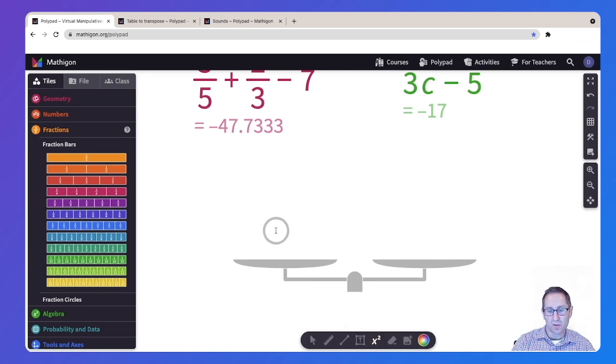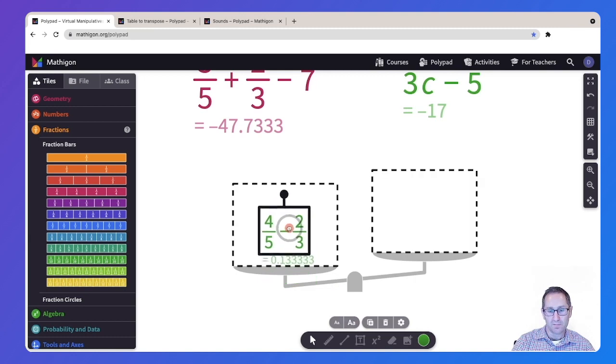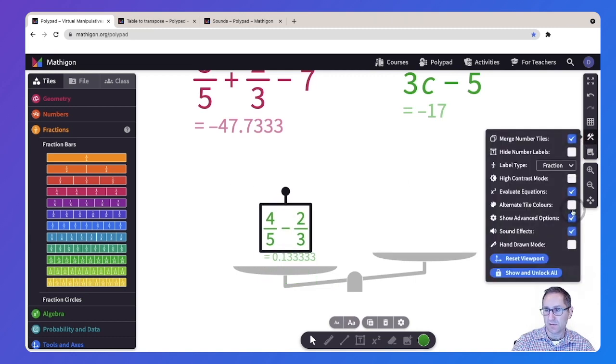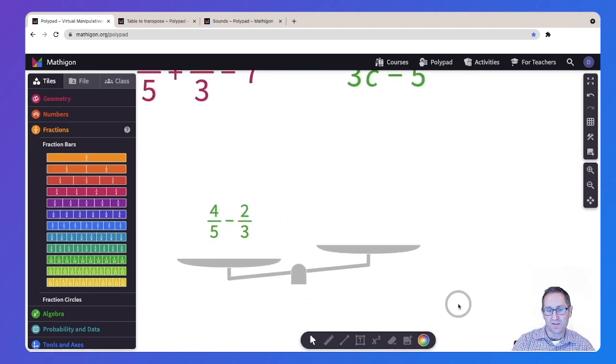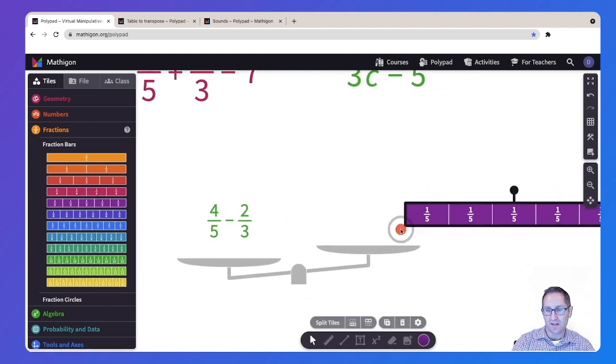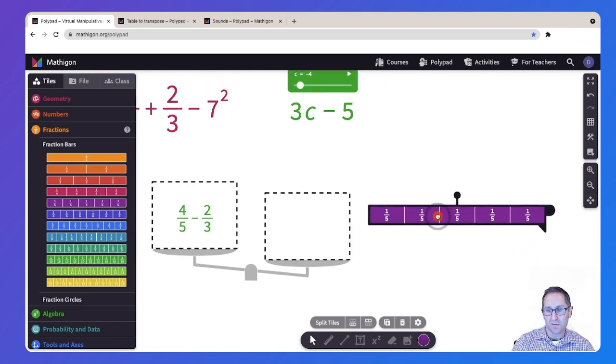But now any equation also works on the balance scale. So if I want to do an equation like four fifths minus two-thirds and put that on one side of the scale, make it bigger here, I can turn off evaluate expressions. And if I want to figure out what four-fifths minus two-thirds is, let me actually do that calculation. Zoom out here, here's four-fifths, well that's five-fifths, let me make it four-fifths, and here's two-thirds.